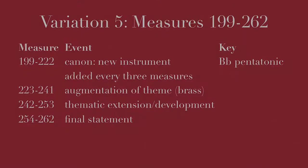Variation 5 consists of a three-bar canon — every three measures a new instrument enters, creating a kind of layered canon or ostinato. When the melody finally comes in, it is in B-flat pentatonic, and then at measure 223, it is presented in augmentation in the brass, and the piece ends in B-flat.